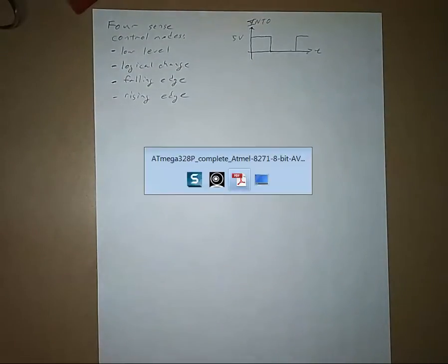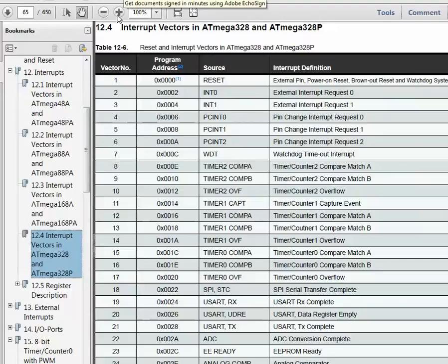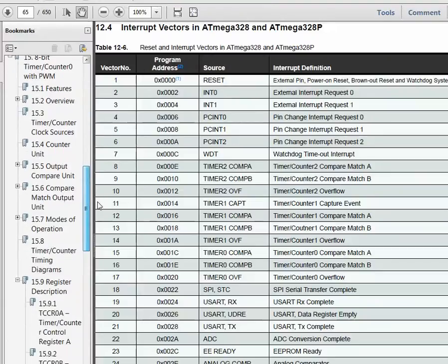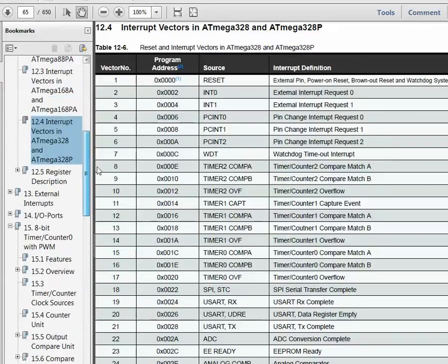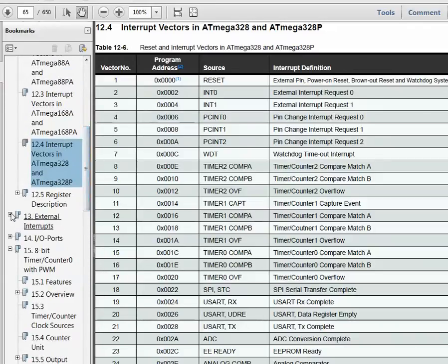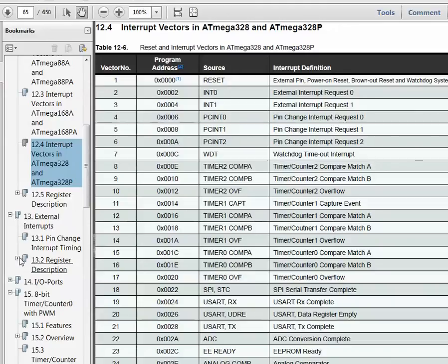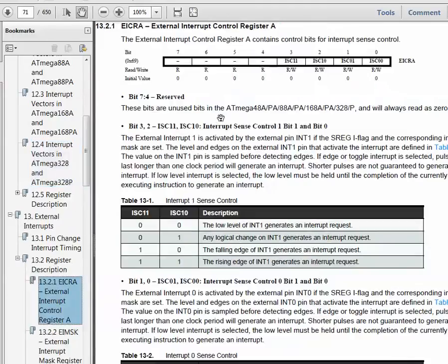Those modes are controlled by a register and that register is called EICRA. So let's go to interrupt external interrupts and the register description. So external interrupt control register A.